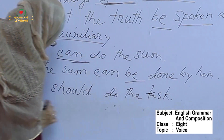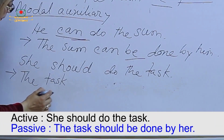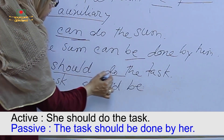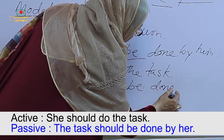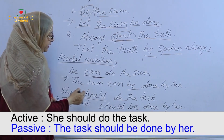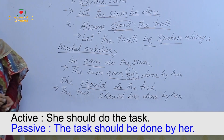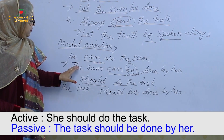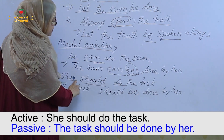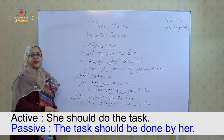'He should do the task' — the task should be done by him. When we turn it into passive, we only use the 'be' verb after the modal auxiliary. Following the same structure: 'He can do the sum' becomes 'the sum can be done by him', and 'He should do the task' becomes 'the task should be done by her'.